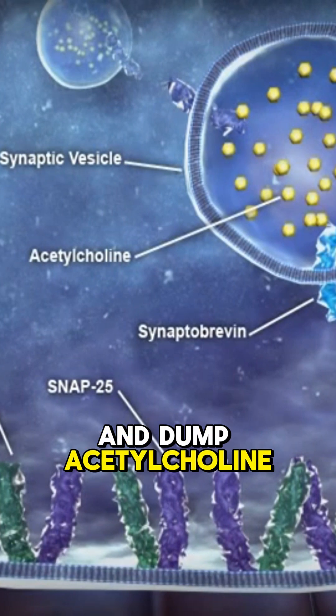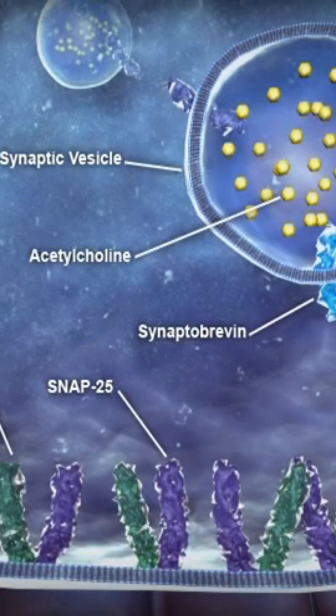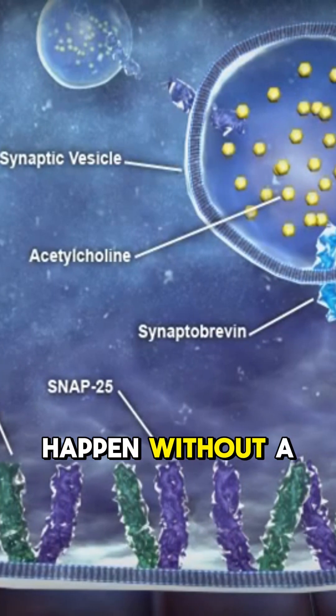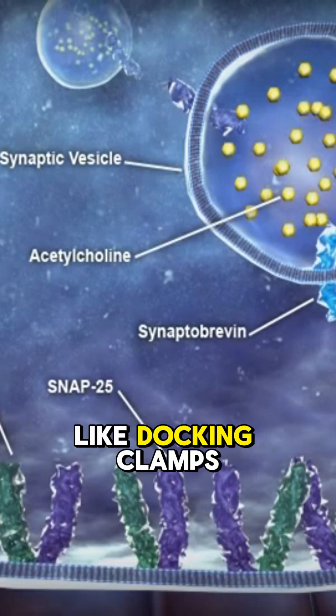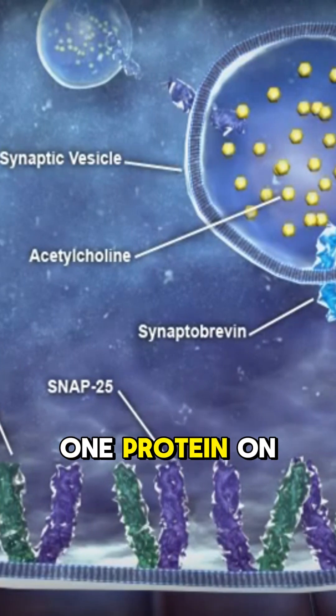Boom, the muscle contracts. But there's a catch - this fusion can't happen without a protein team called the SNARE complex. Think of it like docking clamps. One protein on the vesicle, synaptobrevin, and two on the nerve terminal.